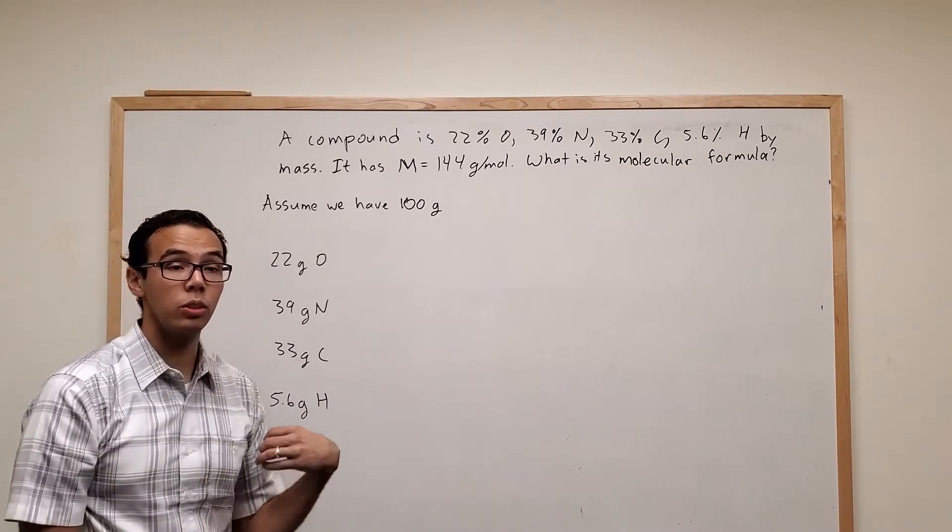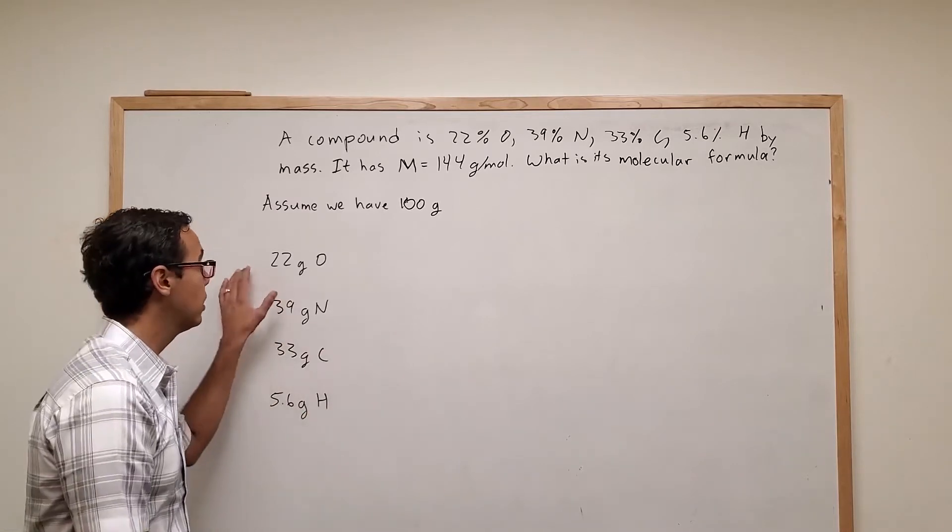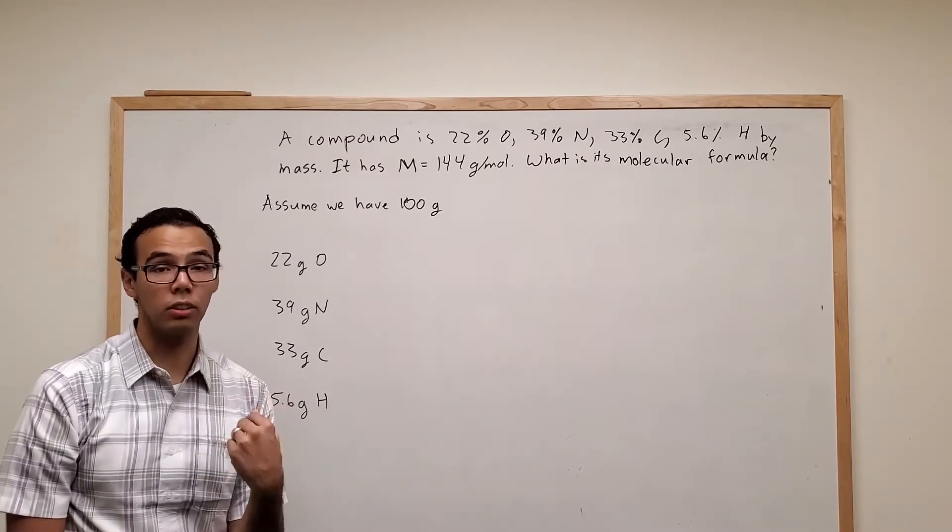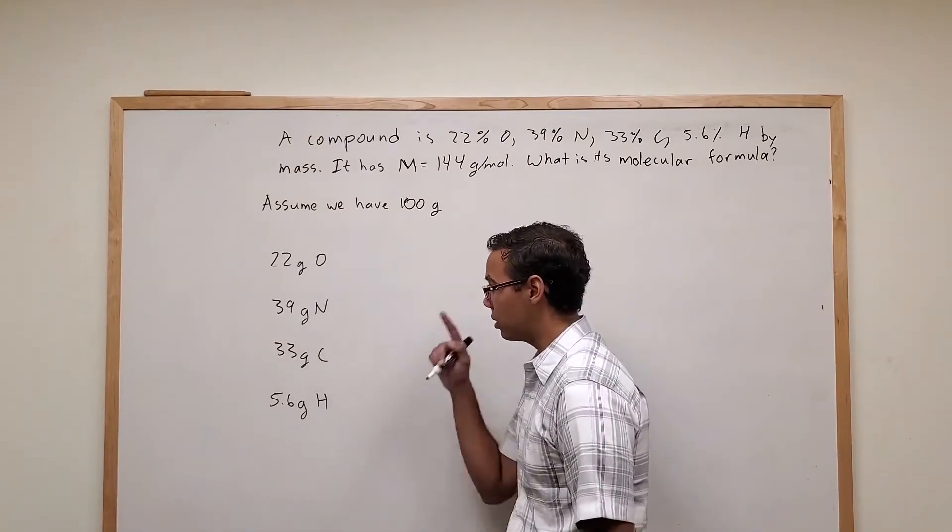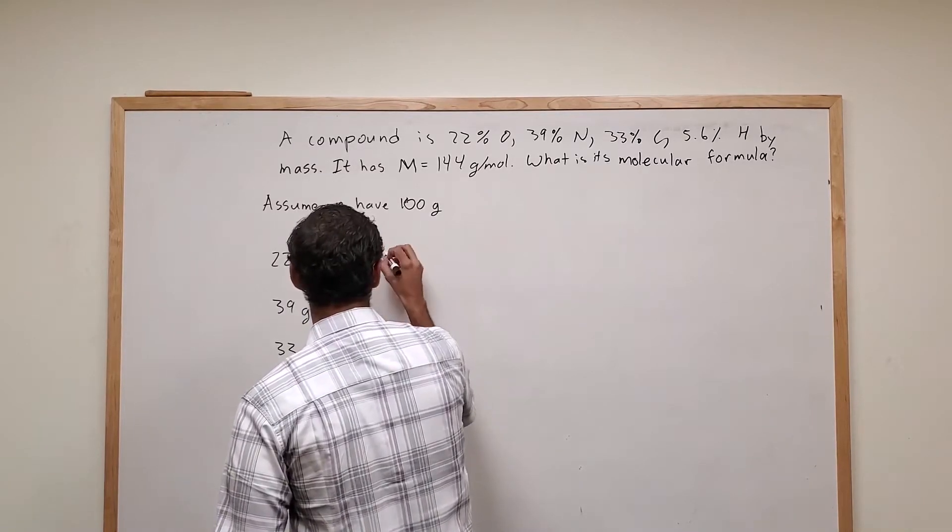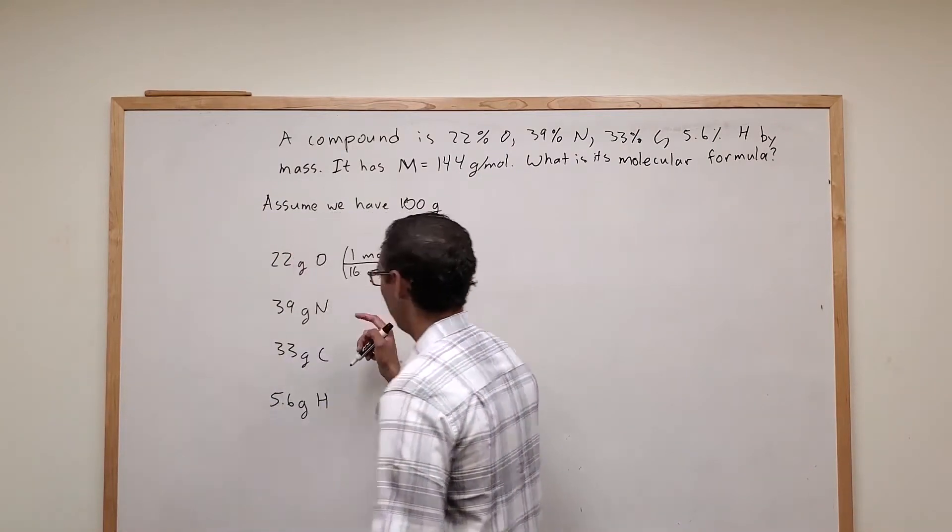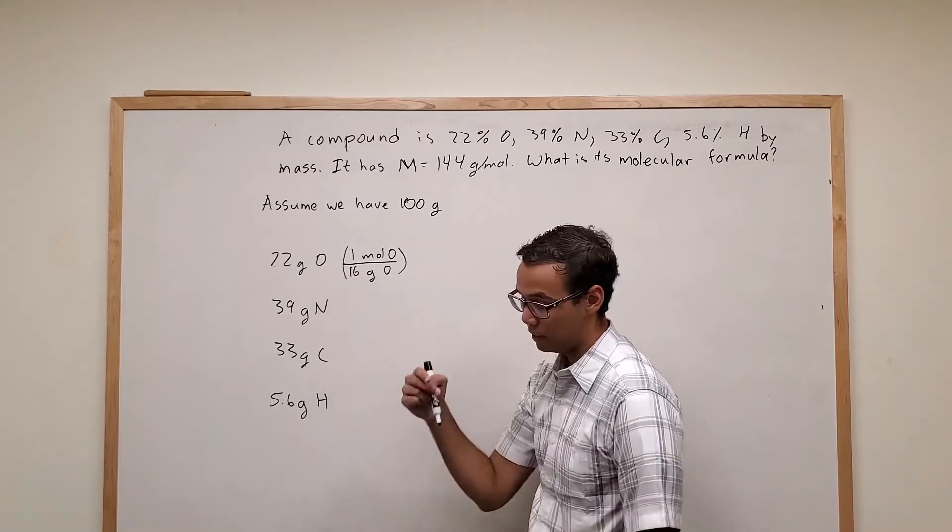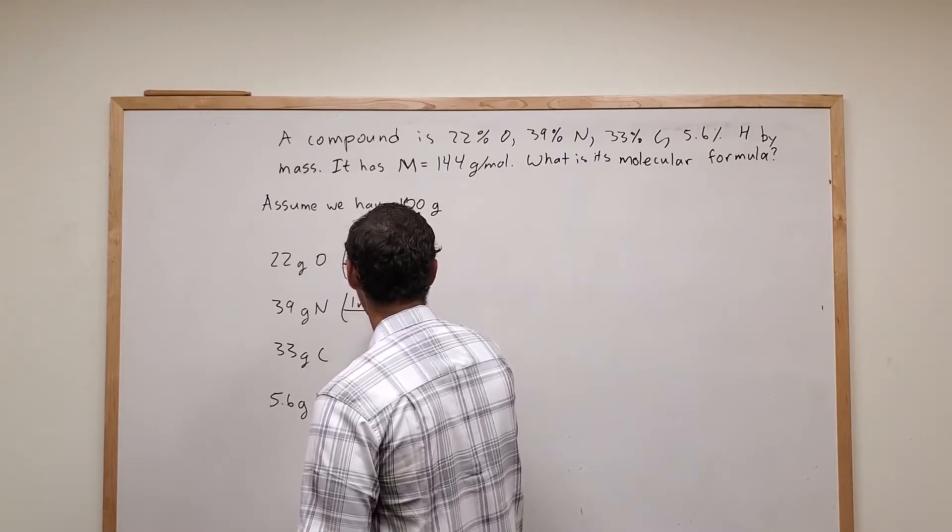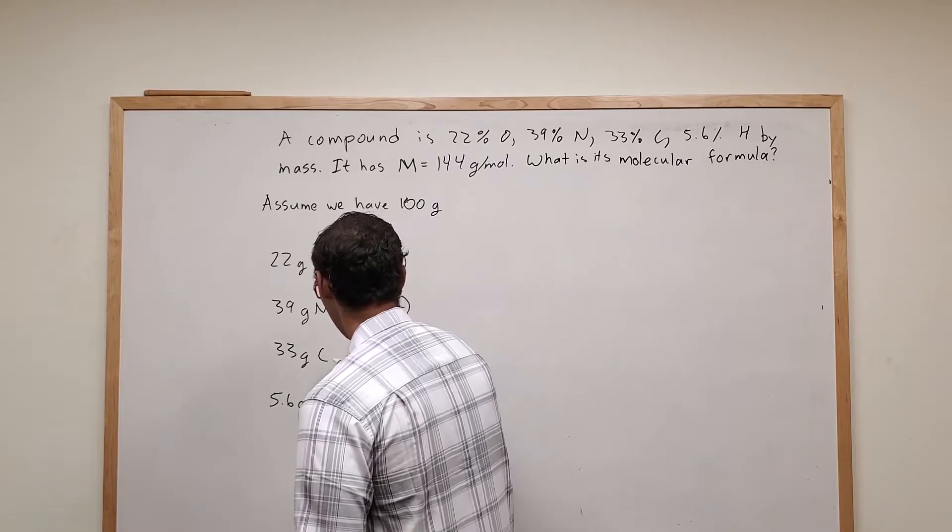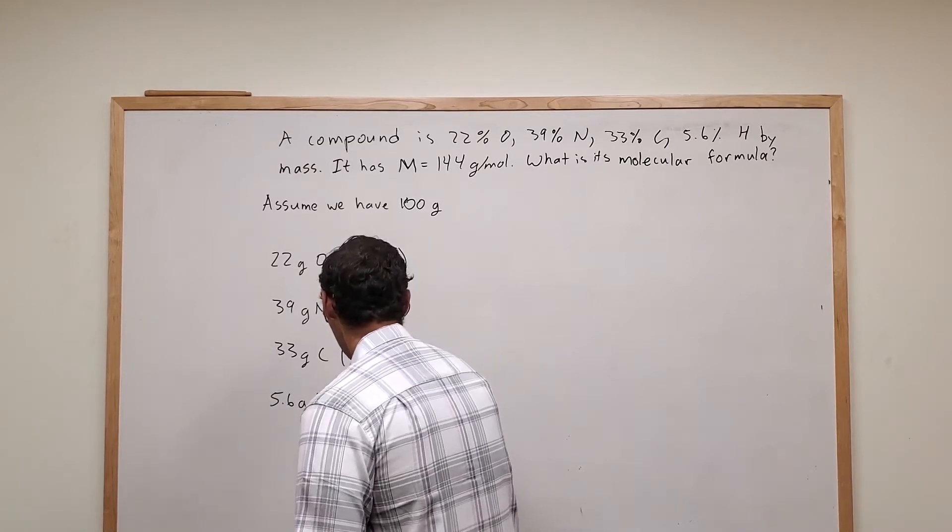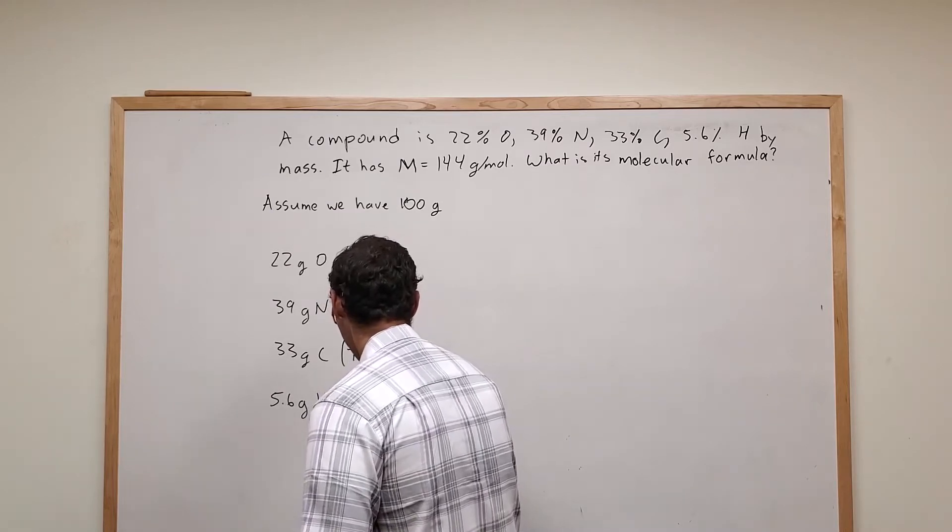But if we convert to moles, that allows us to determine the relationship of these four elements within the molecule. And when I say relationship, I mean just the numerical ratios between them. So first step, we're going to convert all these to moles. So we have one mole oxygen, 16 grams. Pay attention since this oxygen by itself is just 16, if we're doing O2 it would be 32. Here we have one mole of nitrogen for 14 grams. Here we have one mole of carbon, 12 grams. And finally one gram of hydrogen.